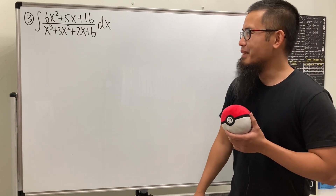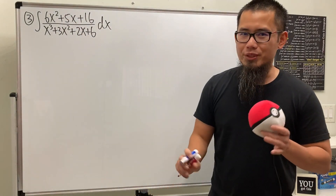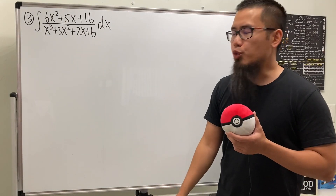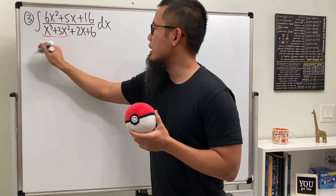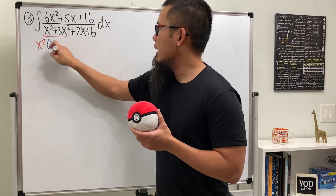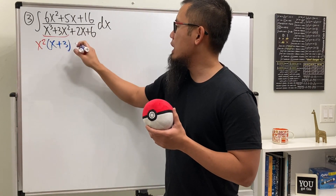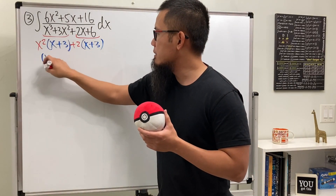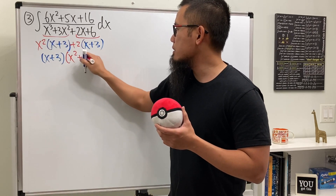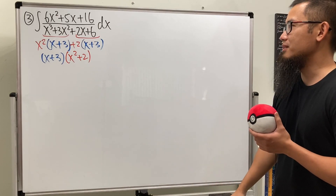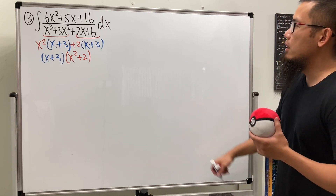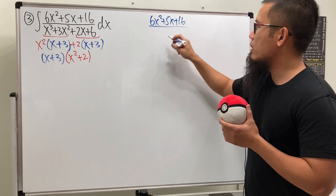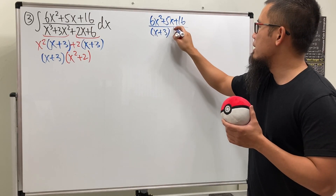For problem three, the degree on top is 2 and the degree on bottom is 3, so we proceed without long division. We need to factor the denominator on our own — it has four terms so we factor by grouping. From the first two terms we factor out x squared, giving x squared(x plus 3), and from the last two terms we factor out 2, giving 2(x plus 3). So the denominator factors as (x plus 3)(x squared plus 2).